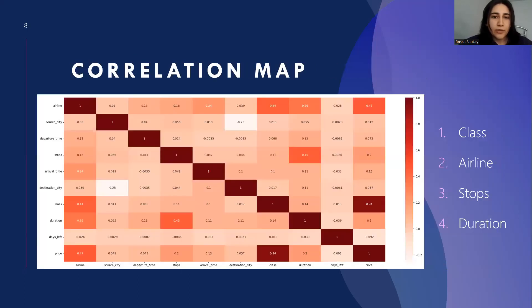In the correlation map, we can see the most important and unimportant factors that affect our target value, which is the price. The four most important values are class, airline, stops, and duration, respectively.